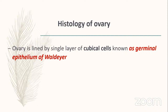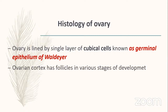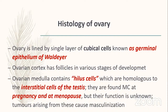Histology of the ovary: it is lined by a single layer of cuboid cells — the germinal epithelium of Waldeyer. The ovarian cortex has follicles in various stages of development. The ovarian medulla consists of hilus cells, homologous to the interstitial cells of the testis. They are found most commonly in pregnancy and at menopause; their function is unknown, but tumors arising from them cause masculinization.